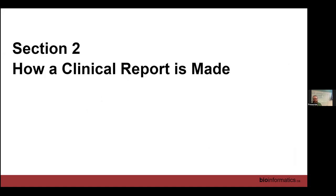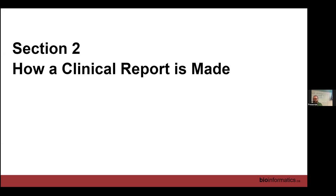So now we get to how a clinical report is actually made. Everything we do for OICR clinical assays has a system that's documented, well organized, and well understood. In the early days of research bioinformatics, it's okay to just write a quick Python script that does a thing — but that's fine until you're doing 50 different things and your scripts all need to talk to each other. If you're not careful, everything will come crashing down, and it certainly won't be reliable enough for a production clinical lab.